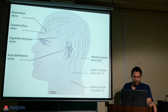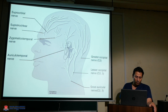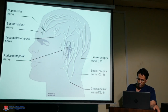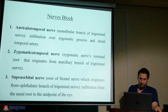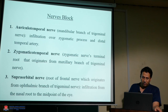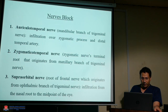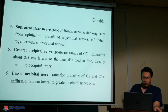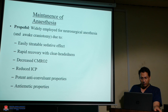The various nerve blocks used include: supraorbital, supratrochlear, zygomaticotemporal nerve, auriculotemporal nerve, great occipital, lesser occipital, and great auricular nerve. The mandibular branch and zygomaticotemporal are branches of the trigeminal nerve. The supraorbital nerve is a branch of the frontal nerve, along with supratrochlear, great occipital, and lateral occipital nerve.